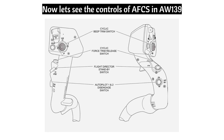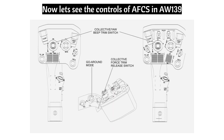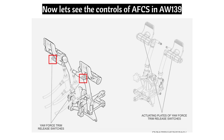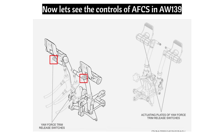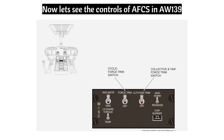This is the cyclic control. You can see the cyclic beep trim switch, cyclic force trim release switch, flight director standby switch, and autopilot 1 and 2 disengage switch. This is the collective stick of the helicopter, where you can see the collective yaw beep trim switch, go-around mode, and collective force trim release switch. Here are the pedals of the helicopter, with the yaw force trim release switch and actuating plates of the yaw force trim release switch. This is the miscellaneous control panel in the central control console in the cockpit.